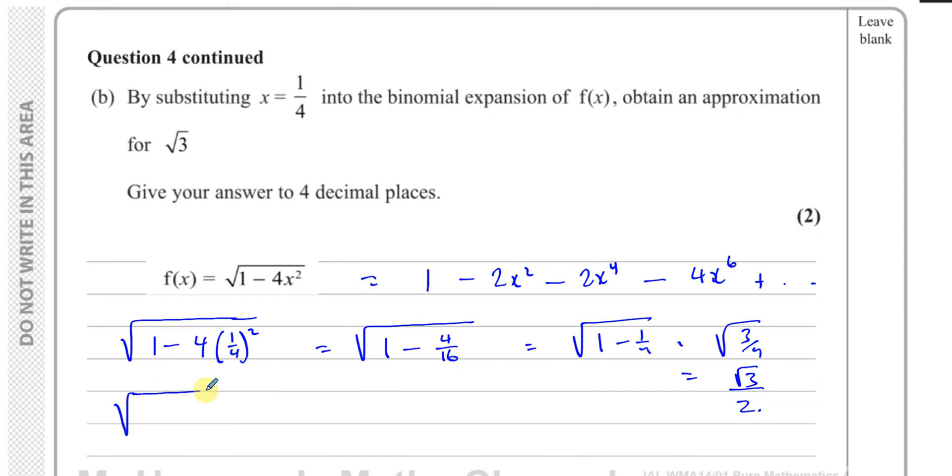So when you put x equals a quarter in here, you end up with root 3 over 2. So we can say that root 3 over 2 will be equal to, for the expansion that we've got, we've got to substitute instead of x a quarter: 1 minus 2 times a quarter squared, minus 2 times a quarter to the power of 4, minus 4 times a quarter to the power of 6.